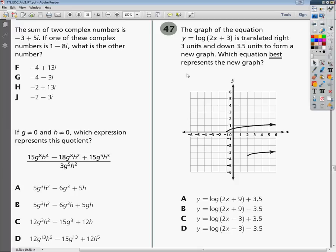Welcome. This is the Tennessee End of Course Algebra 2 Practice Test, question number 47. The question says the graph of the equation y equals log of 2x plus 3 is translated right 3 units and down 3.5 units.